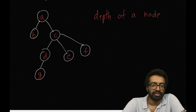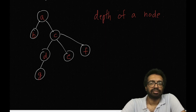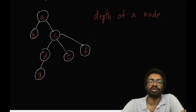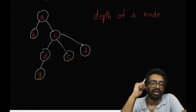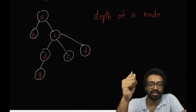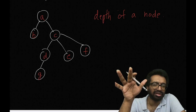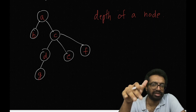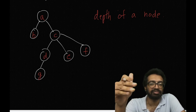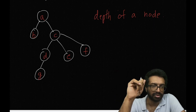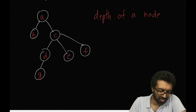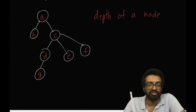Here we are looking at another tree of letters A through G. We are interested in the definition of depth of a node. Height of a node is the maximum distance from that node to a leaf. Now, depth of a node is the distance from that node to the root of the tree.